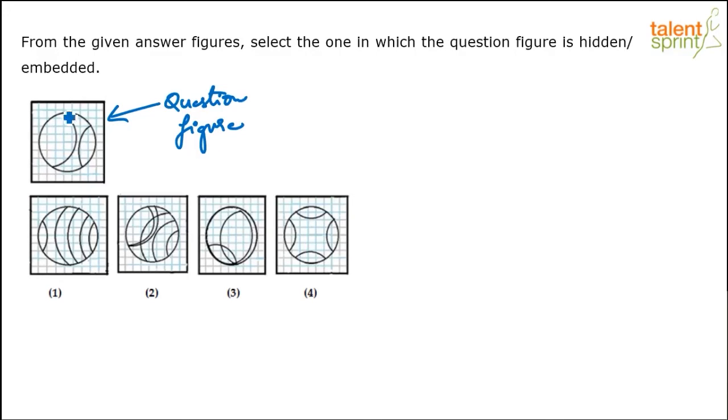If you look at option one, we don't have this. We don't have a curve which is opening towards left. A smaller one is there but not as big as this one, so option one gets eliminated. Option two, maybe. You see this one? I think this is close.